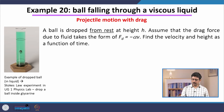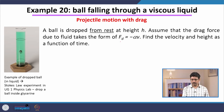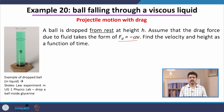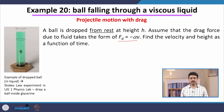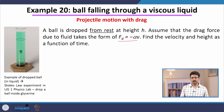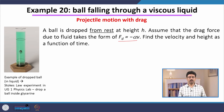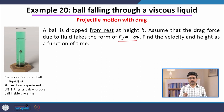Assume that the drag force due to the fluid takes the form F = -αv, where α is a constant. It is linearly proportional to v, and the minus sign indicates that the direction is opposite to the direction of the velocity. From the last lecture, we know under what condition we expect the drag force to take this particular form.